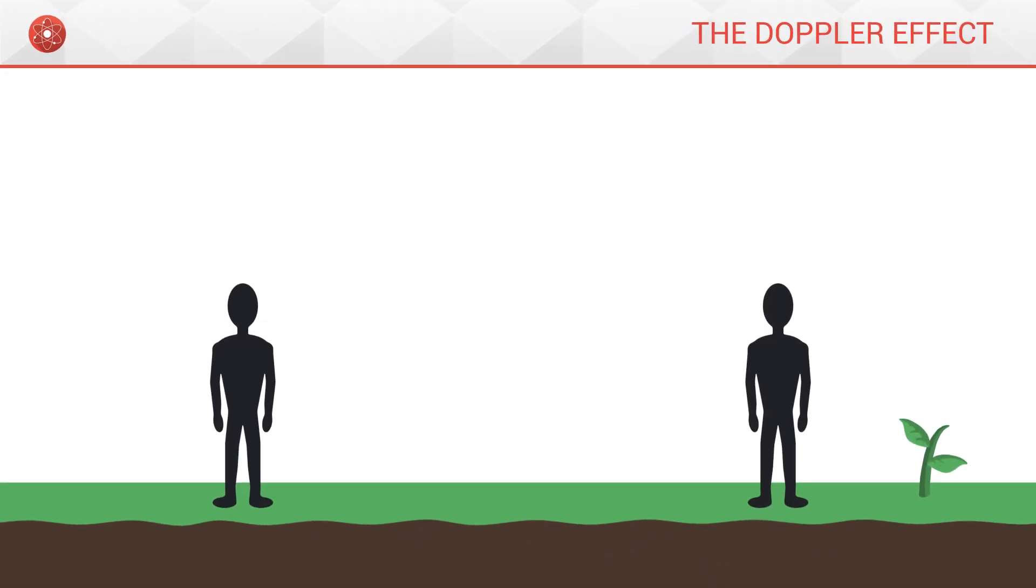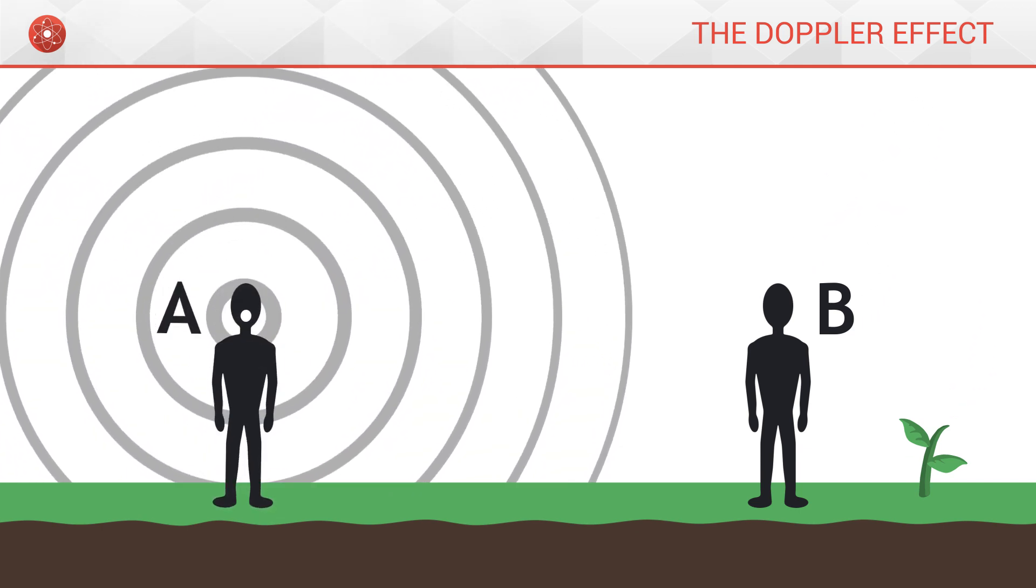Let's take two individuals. We'll call them A and B. A begins to shout. While shouting, he produces a wave which propagates through the air with a certain frequency.